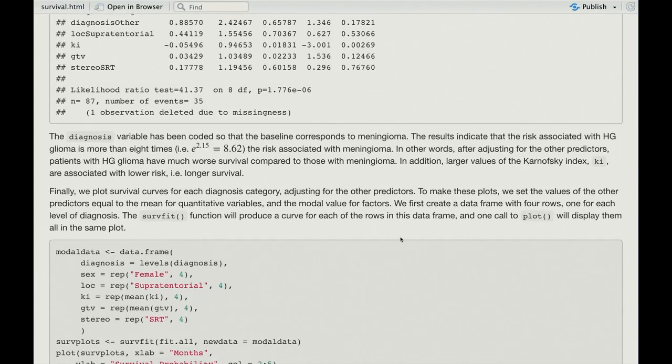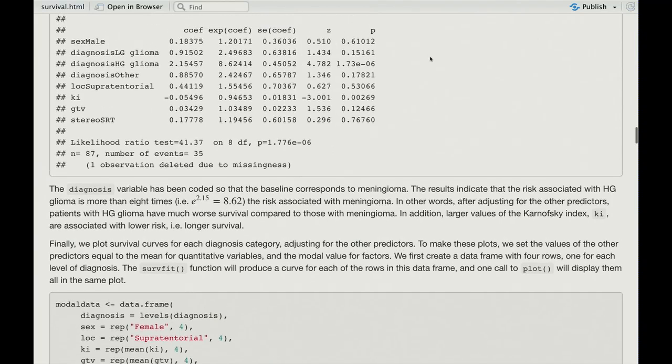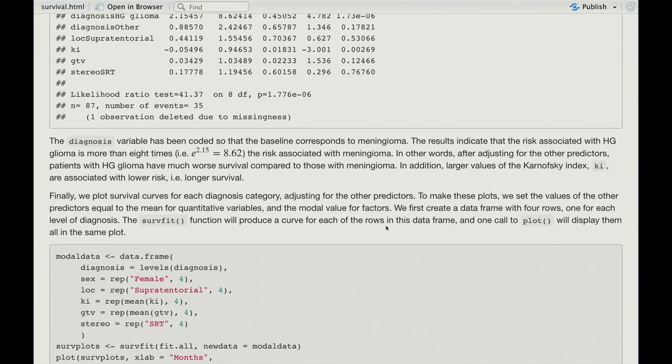Finally, we plot the survival curves for each diagnosis category adjusting for the other predictors. Okay. So, the diagnostic category seems to be important. At least one of them is important. So, we want to leave all the other predictors in the model. And when you plot the survival curves, you need to... The output of a Cox-PH model is for each subject, when you make a prediction, you get a whole survival curve. Okay. So, we need to specify what the other values of the predictors are. So, when we want to focus on the diagnosis category, what we do is we set some typical values for the other parameters. And if they're quantitative, we'll just set the mean value. And if they're categorical, we'll set the modal value. Because we need to put some value in for all the predictors.